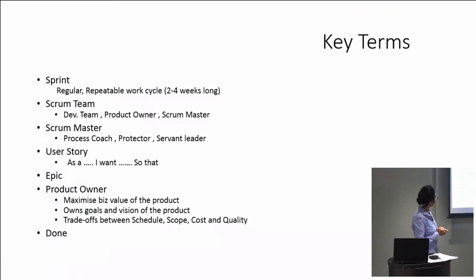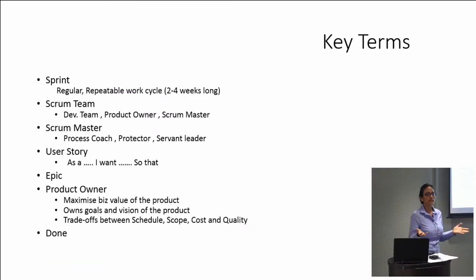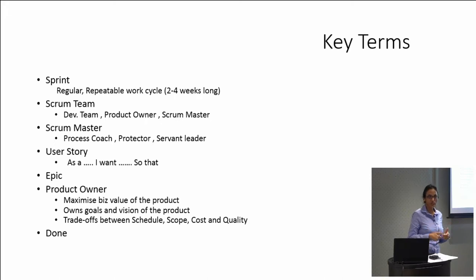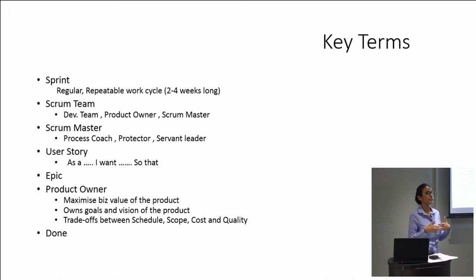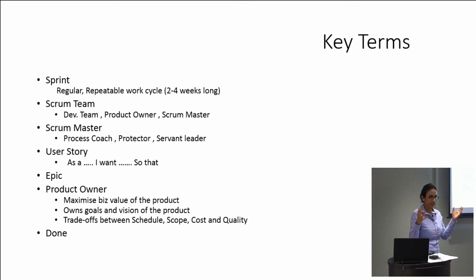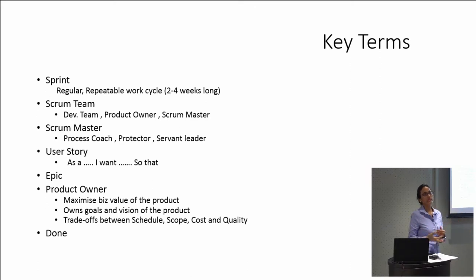The scrum master is a servant leader. What do we mean by servant leader? It is a leader whose aim is not just to get a status update, but to serve the team and make sure that the end goal of the sprint is achieved.